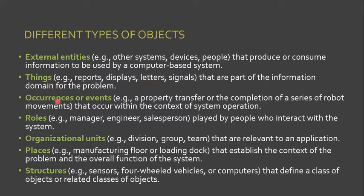We also have occurrences or events — things that occur within the context of system operation. A good example is a property transfer or the completion of a series of robot movements. Next are roles, played by people who interact with the system, such as manager, engineer, and salesperson — basically the users. We also have organizational units relevant to an application, like a division or department, including groups and teams of people.